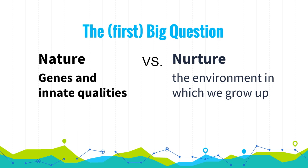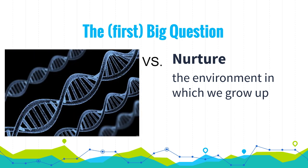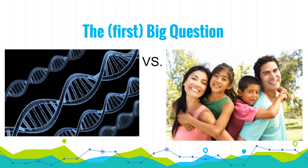This leads to the biggest contrast in psychology: the nature versus nurture argument. Those on the nature side — like Plato — argue that how we're born, including genes and innate qualities, determines who we'll be. The nurture group — like Aristotle and John Locke — argue it's the environment we grow up in, such as family interactions, that shapes our development.